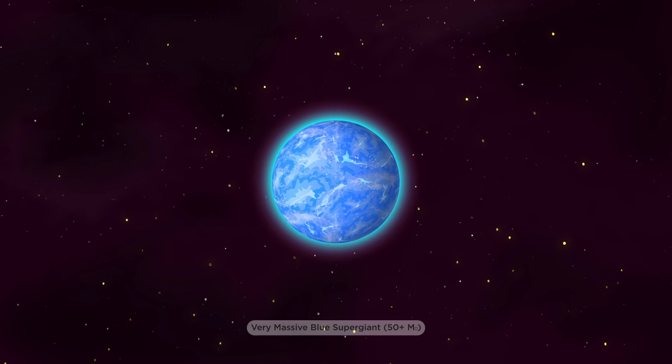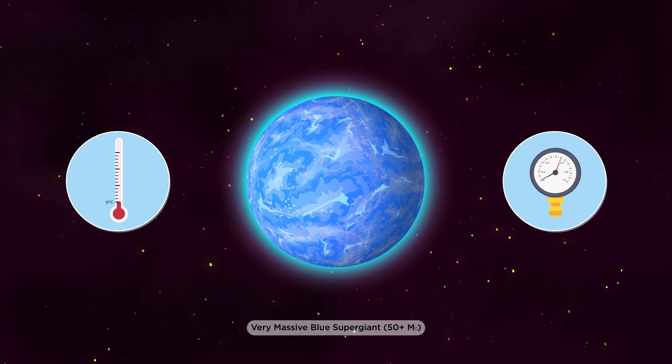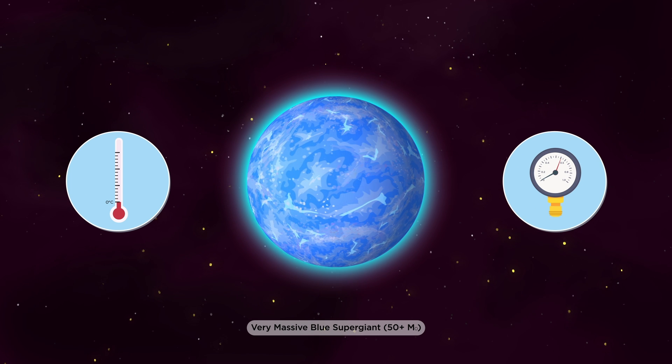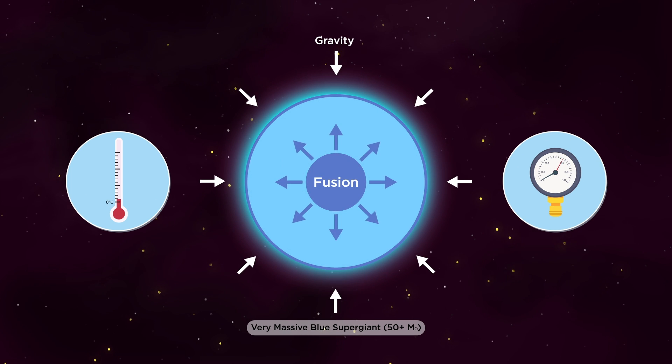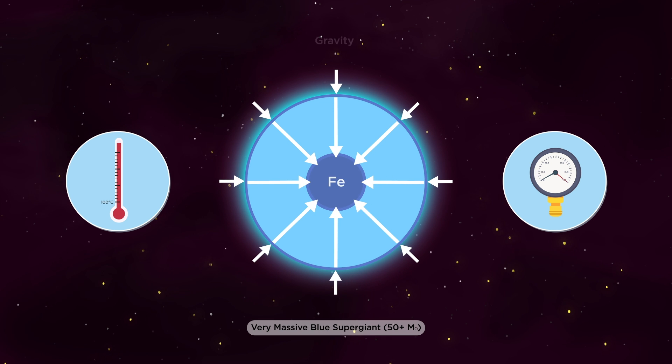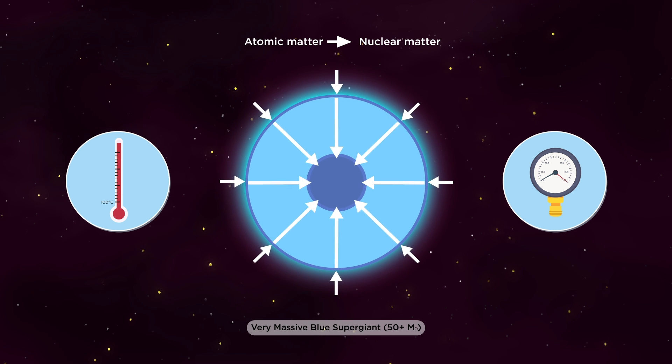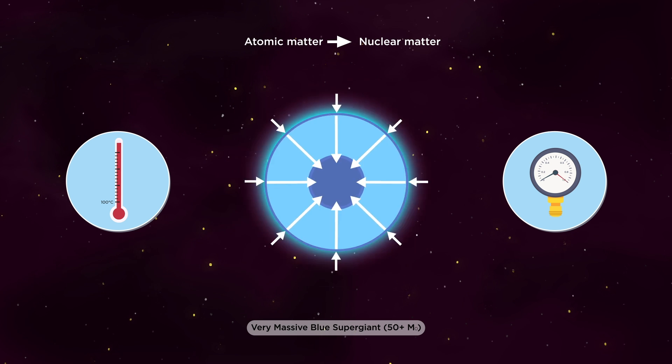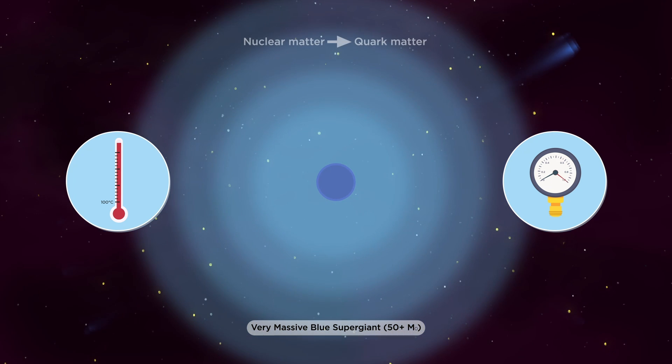However some of the largest stars may follow a different route. Here there are extreme conditions created by the star's strong gravitational field. This compresses the star's matter creating high densities and temperature conditions. This star is a blue supergiant and has the conditions required for the transition from nuclear matter to quark matter.